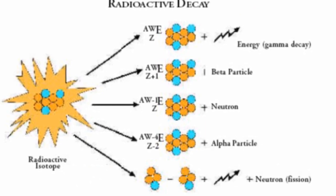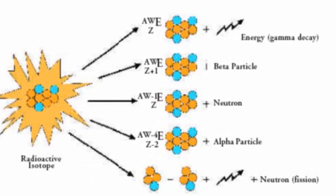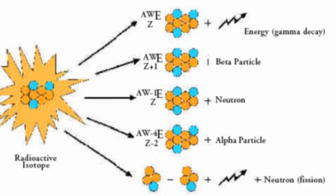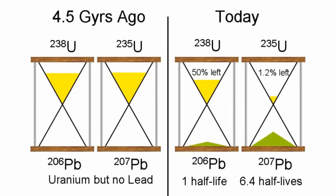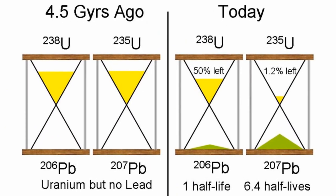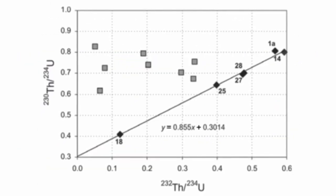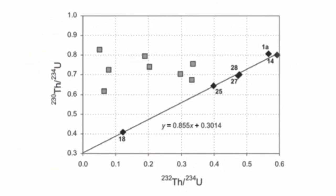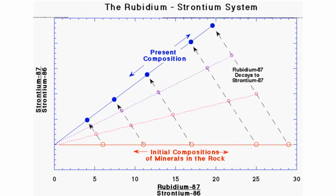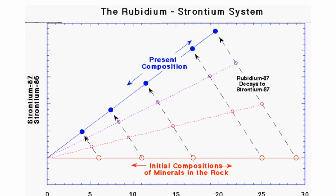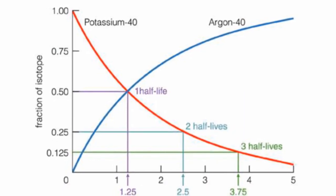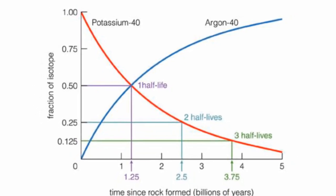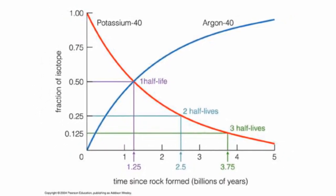In older strata, there would have been more time for the isotopes to transmute. As it turns out, that's exactly what we see. In lower strata, uranium-238 is uniformly found with more and more lead. Uranium-234 is consistently found with more and more thorium. Rubidium-87 is consistently found with more strontium. And potassium-40 is always found with increasing rates of argon as you go to deeper and deeper strata.